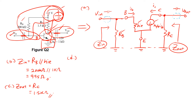Next, for part D, we are supposed to calculate the voltage gain of this amplifier circuit. The voltage gain AV — the simplest formula for voltage gain is V-out over V-in. We need to derive V-out and V-in individually. We start with V-out first — this is where V-out is.